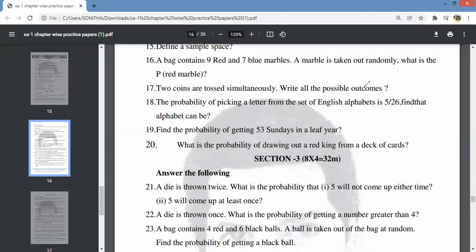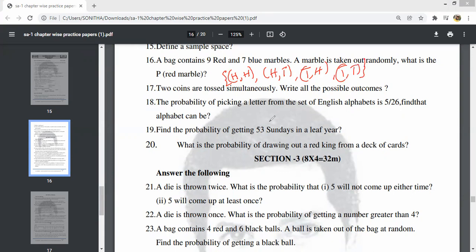Two coins are tossed simultaneously. What are the possible outcomes? There are 4 possible outcomes. The probability of picking a letter M from the English alphabet is 1 out of 26, so 1 by 26.